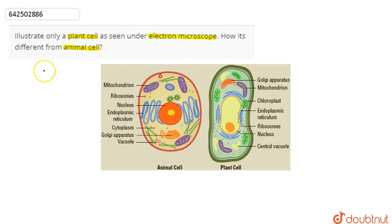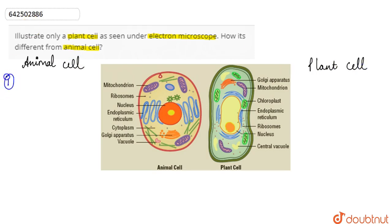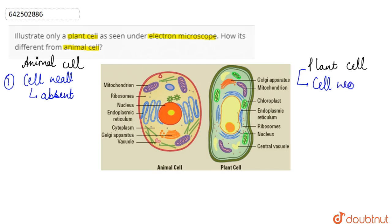So we start differentiating between plant cell and the animal cell. The very first difference is that in animal cell, there is no cell wall — the cell wall is absent in case of the animal cell. Whereas in case of the plant cell, the cell wall is present. The cell wall is the outermost membrane in the plant cell.